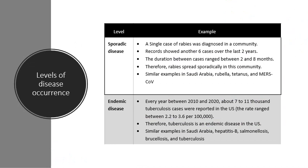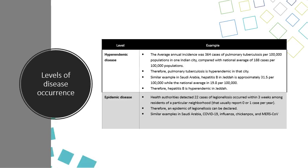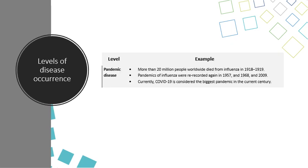Examples are given for each level of disease occurrence by different organisms, including hyperendemic and epidemic diseases. Examples of pandemic-level disease include COVID-19 as mentioned.